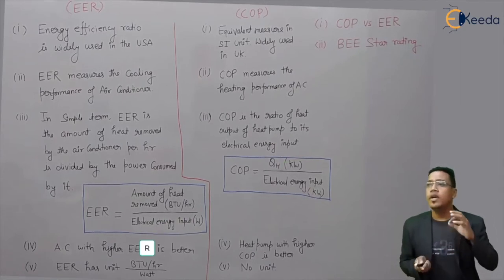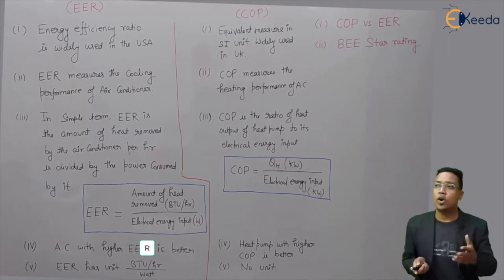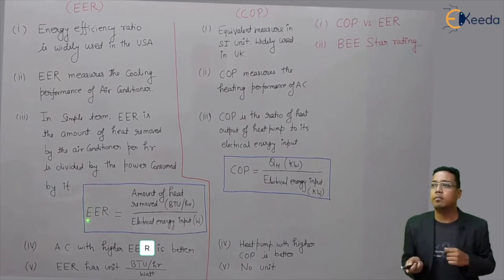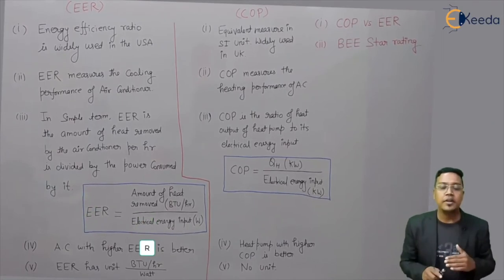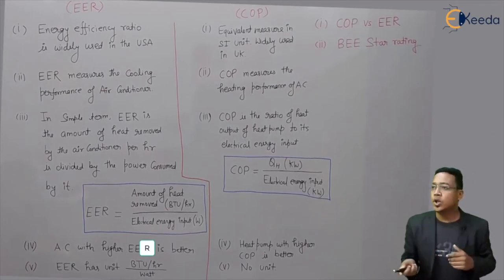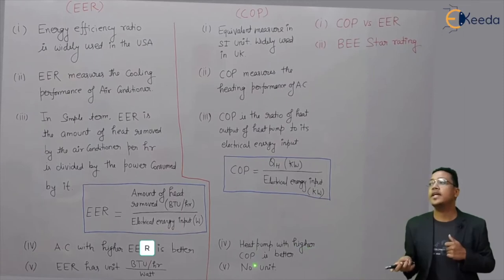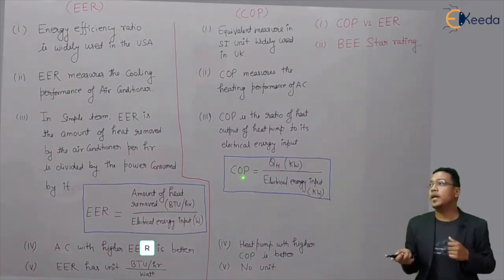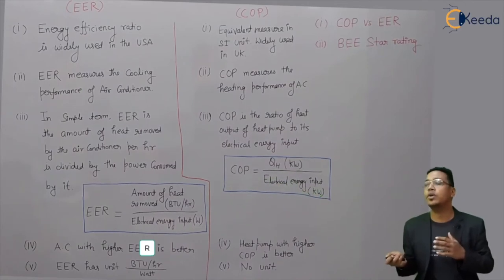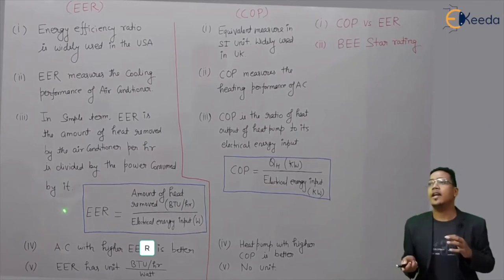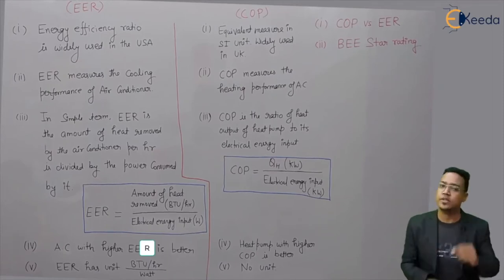For an AC, higher EER is better. EER is inversely proportional to electrical energy input, so if EER is higher, the electrical energy input is less, meaning savings are more. Similarly, a heat pump with higher COP is better. COP is also inversely proportional to electrical energy input. The key difference is that EER is for cooling performance and COP is for heating performance.